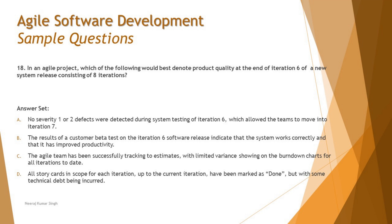Option B is the best possible answer to define quality is up to the mark. Option C says: the agile team has been successfully tracking to estimates with limited variance on burn-down charts for all iterations to date. This is more from a scheduling and effort estimation perspective and doesn't talk about product quality. You can estimate work accurately while accumulating technical debt — it indicates team velocity but not product quality.